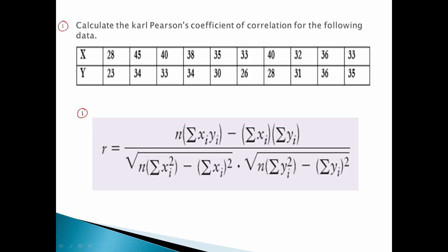Next, we will count the number of data points. The number of data points is 1, 2, 3, 4, 5, 6, 7, 8, 9, and 10. So the total number of data points is n equals 10.